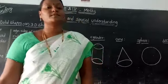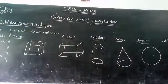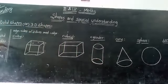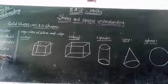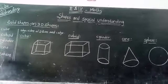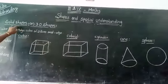Once again I will explain 3D shapes. See here: cube, cuboid, cylinder, cone, and sphere. 3D shapes are solid shapes.